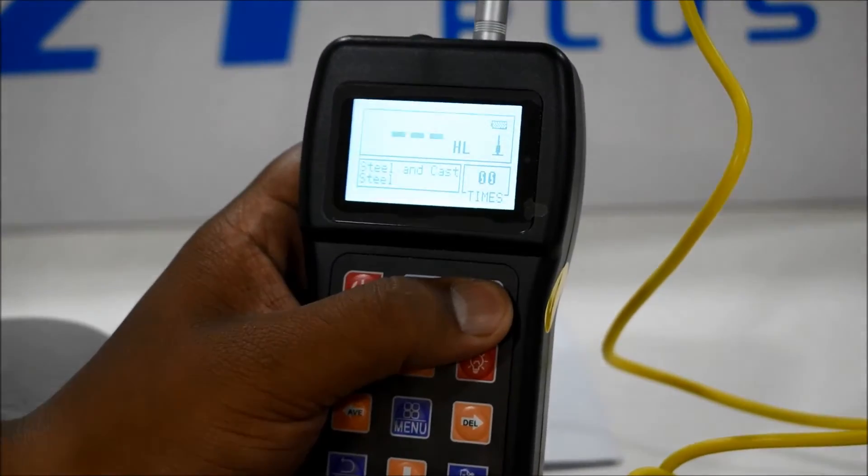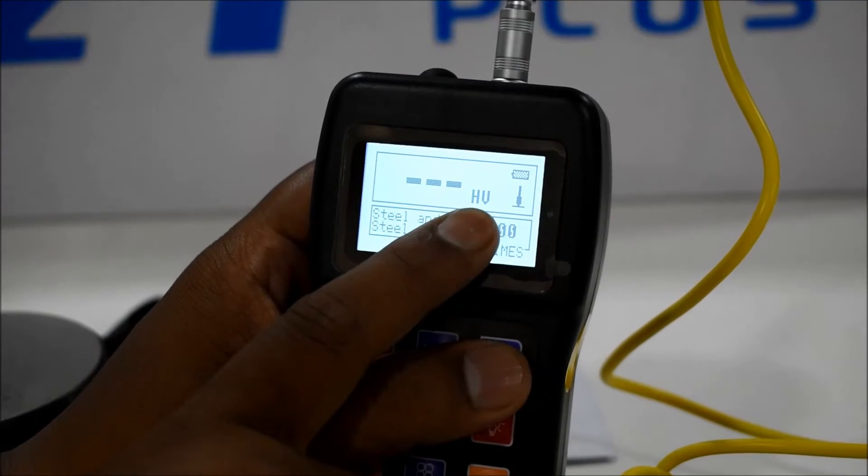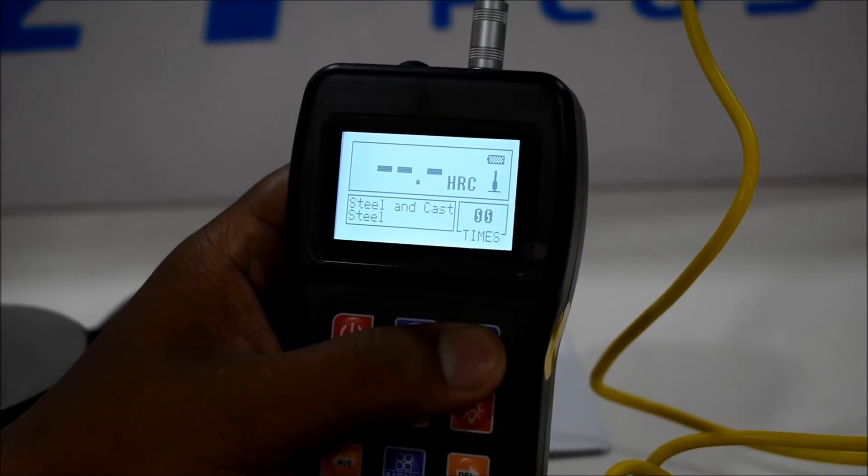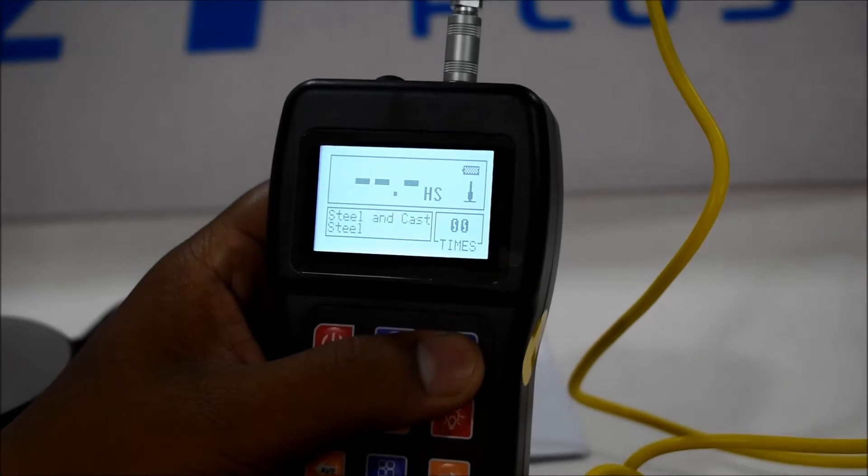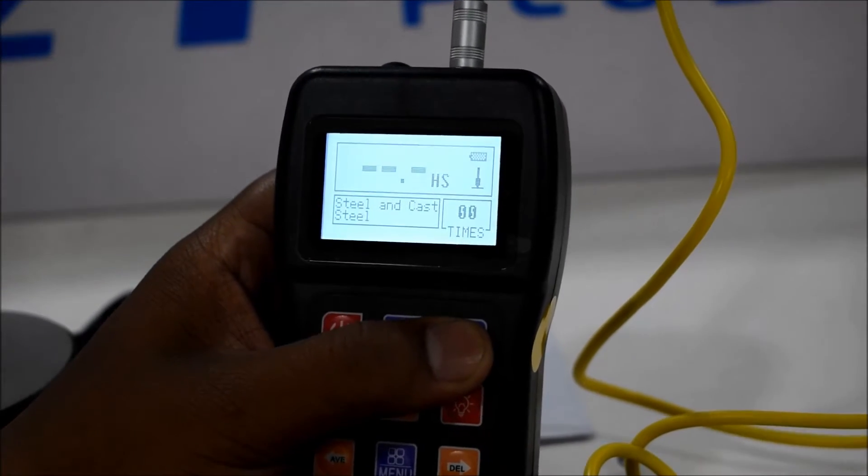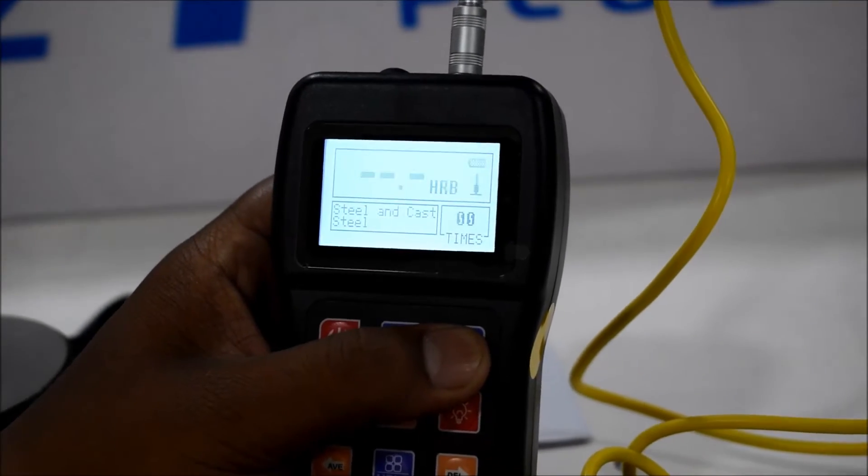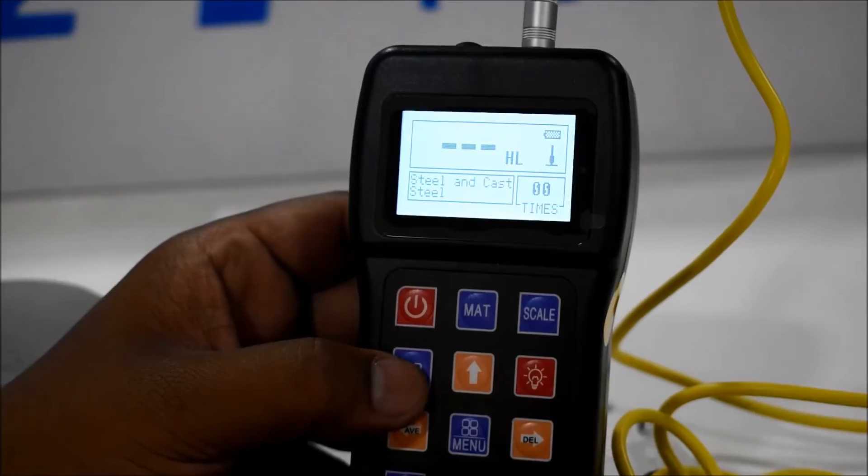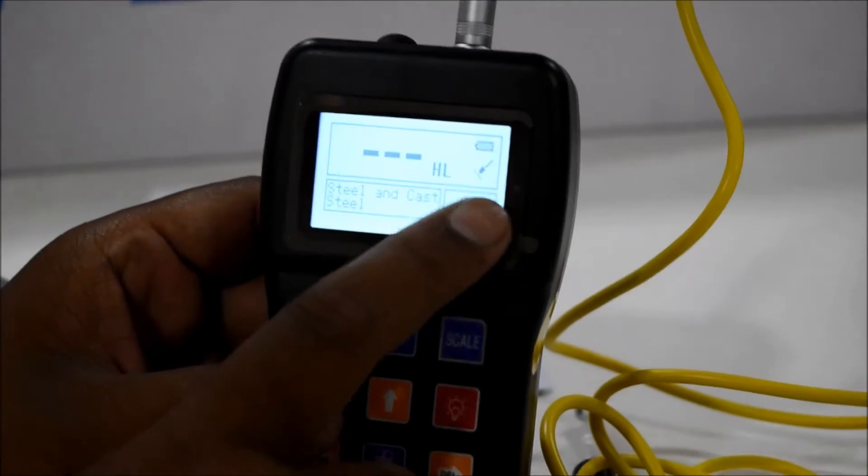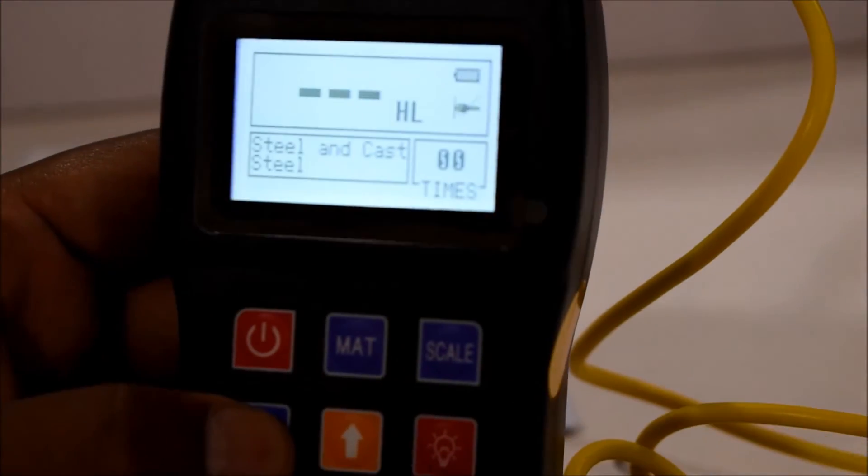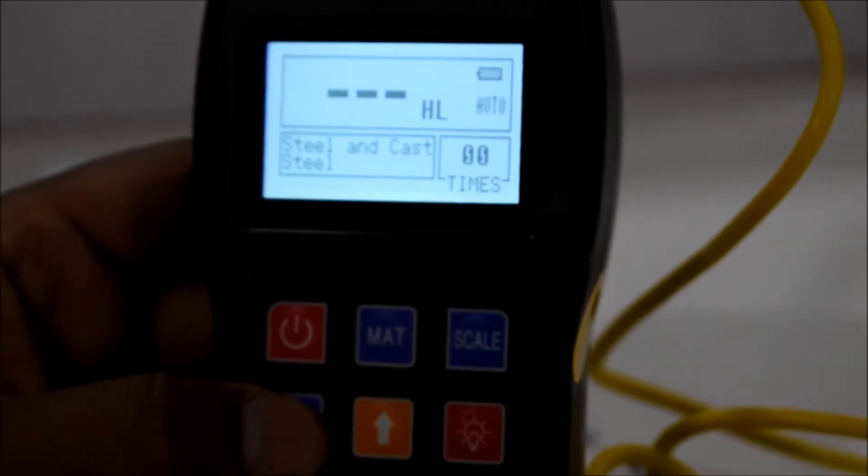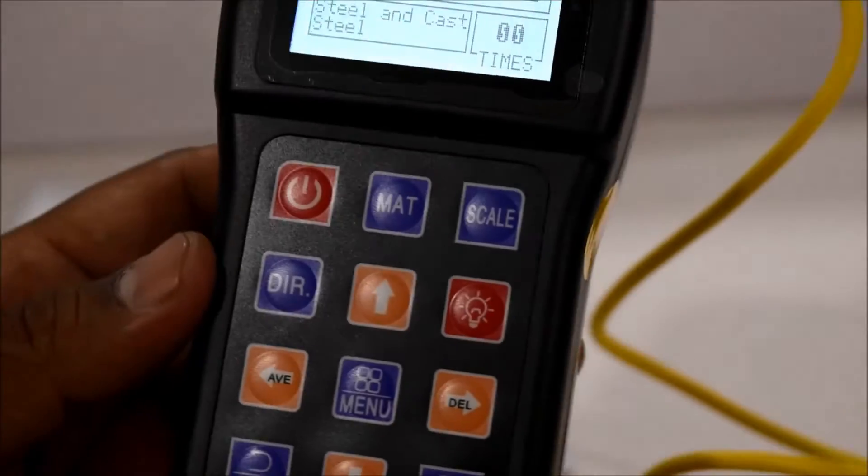For calibration, we provide you HV, HB, HRC, HS, and HRB scales. Set the probe direction, then lock out. When the probe changes direction, it gets it automatically. We will set a down type probe.